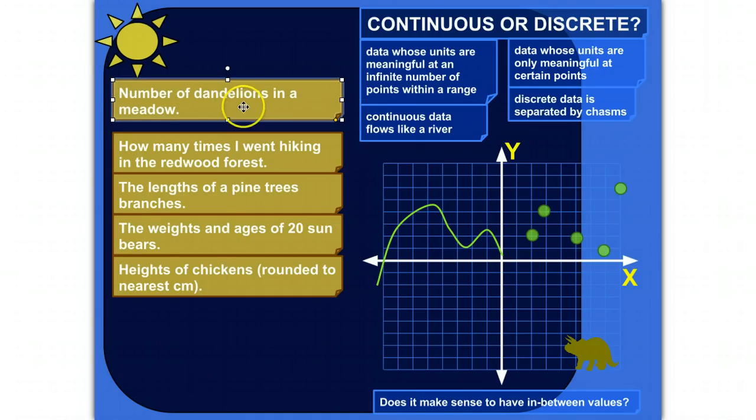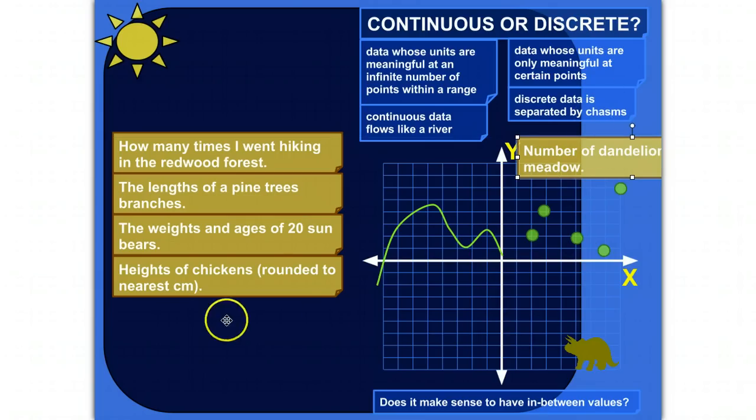But you're not going to see 2.586 dandelions. You're not going to see 2 and 1/16th dandelions. You're going to see a whole number of dandelions. So does it make sense to have in-between values if you're talking about the number of dandelions? No, you're going to have 1 dandelion, 2 dandelions, 1,000 dandelions, 0 dandelions. But you're not going to have parts of dandelions. Okay, so that would be discrete. There's only certain values that would make sense. So I'll put these guys over on the right with discrete.